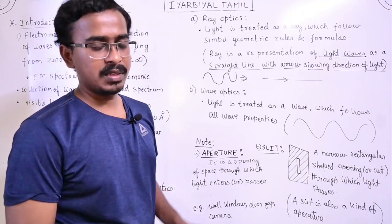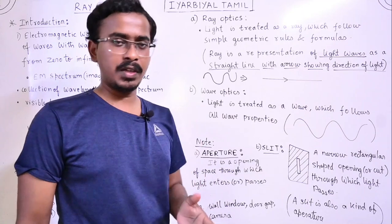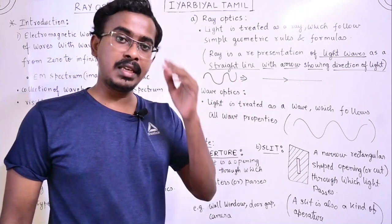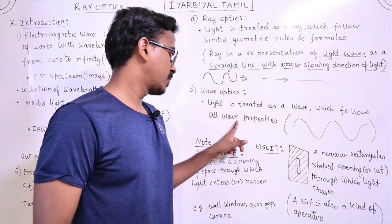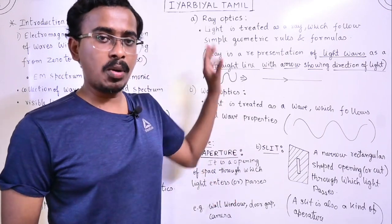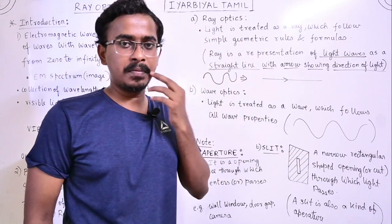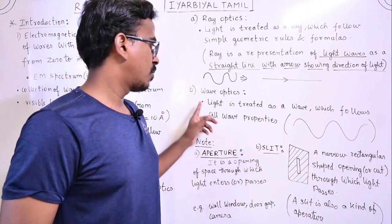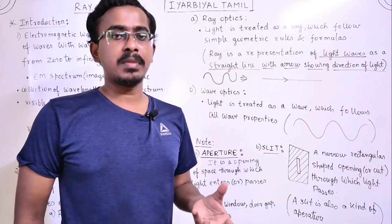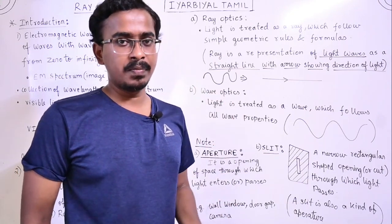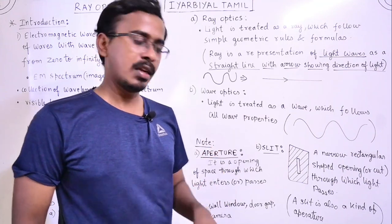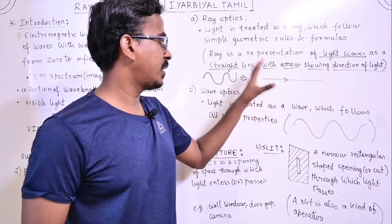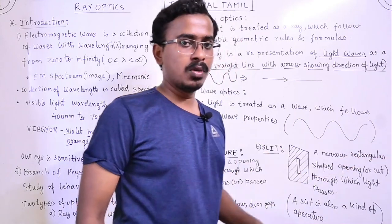In Wave Optics, light is treated as a wave, which follows all wave properties. The wave properties you studied in class 11 — such as wave equations, frequency, and time period — are applied here. So in ray optics we use simple geometry, while in wave optics we apply wave properties.